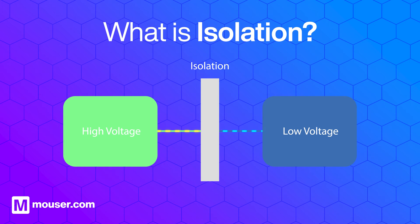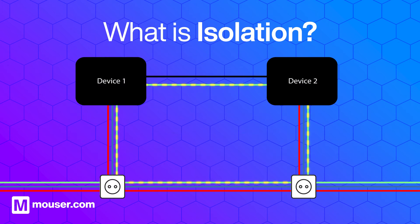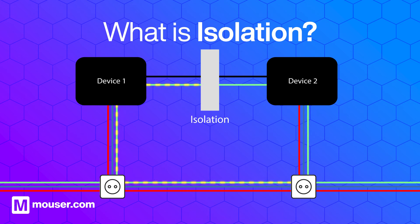It's an important function that protects people and equipment from dangerous voltages, and prevents noise in sensitive circuits by eliminating ground loops.